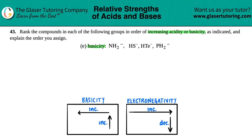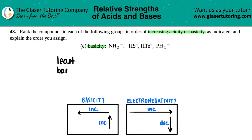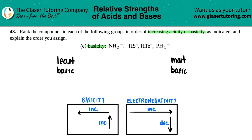Let's write down our parameters here. We want to go by increasing basicity, which means that my least basic would be on the left side, and my most basic would be on the right side. Here is my little trend for basicity.